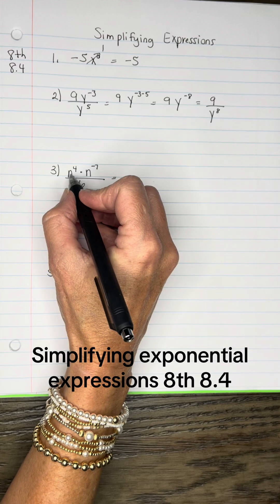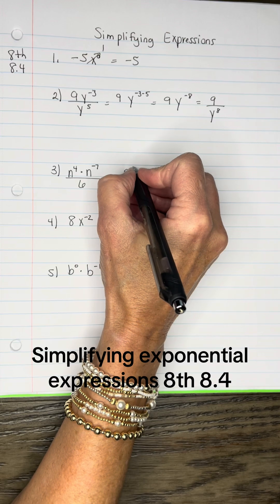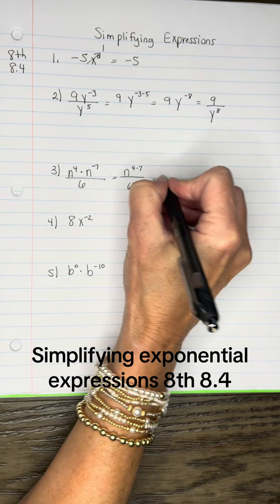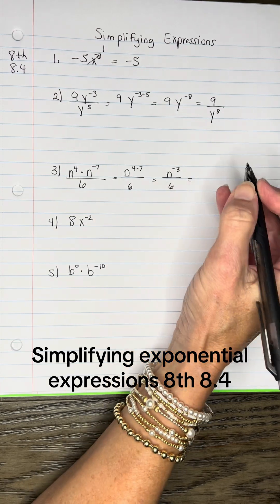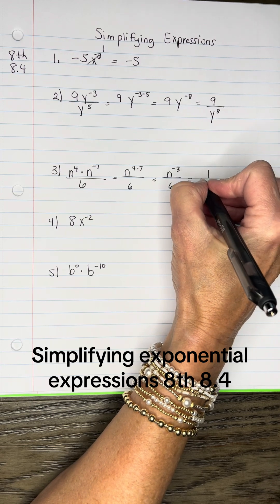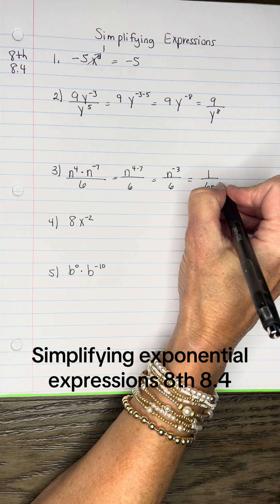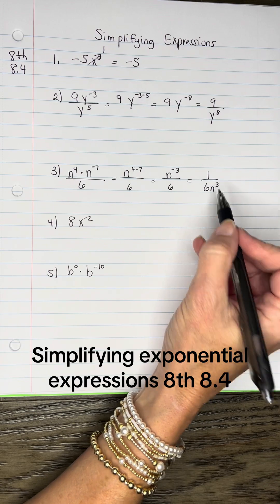And on this one, I've got N, the same basis, so 4 plus negative 7 or 4 minus 7 over 6 will become N to the negative 3 over 6, but we're not allowed to have that N with a negative 3, so I'll have to put a 1 in the numerator's place and then bring that N down to the denominator's place and change it to a positive 3.